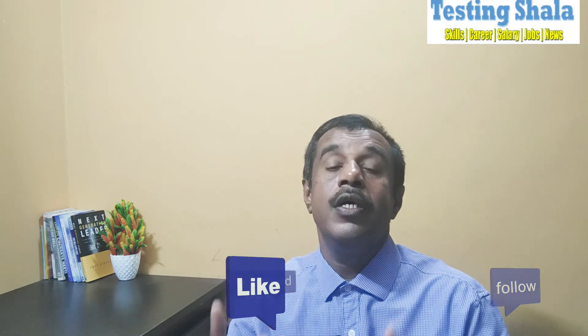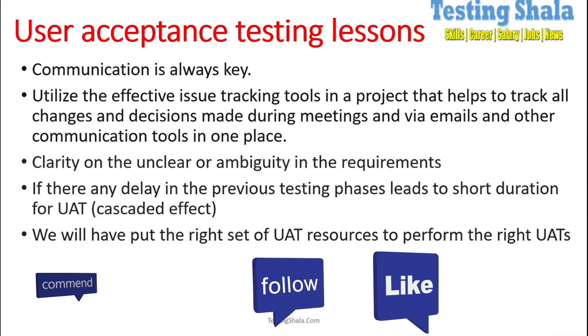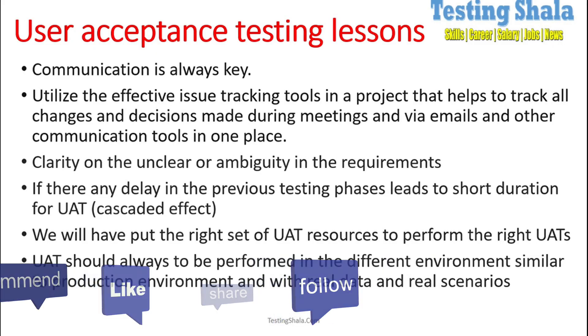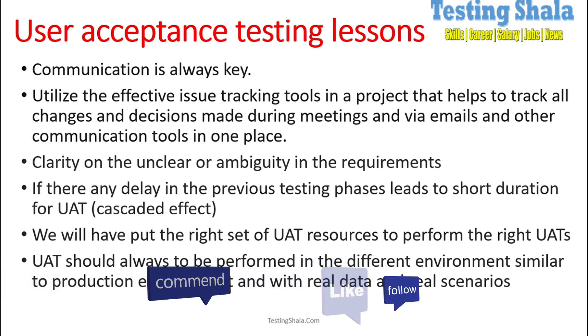The fifth learning from doing UAT testing is that you should build the right testing team, the right end-user team, and the right customer team. Only then will your user acceptance testing be successful. If you do not have the right talent and right people on the ground to test the UAT functionality, it will be a big disaster.